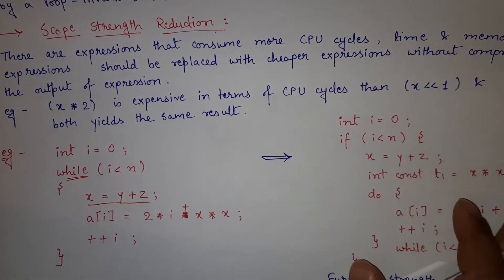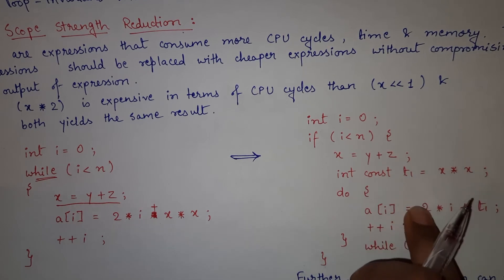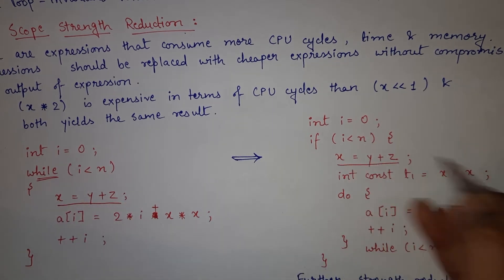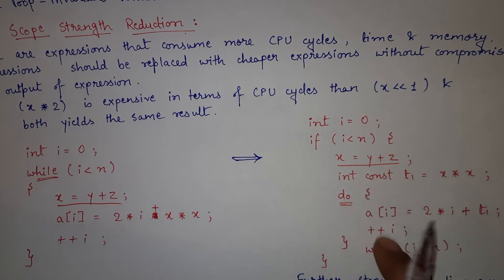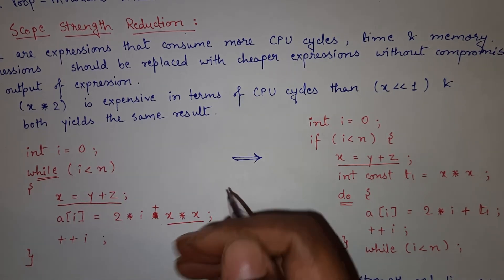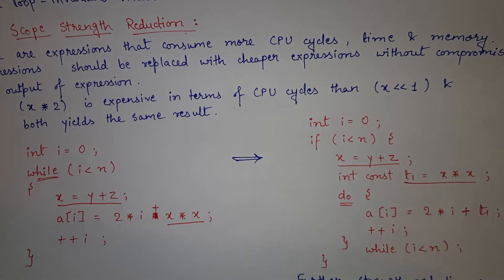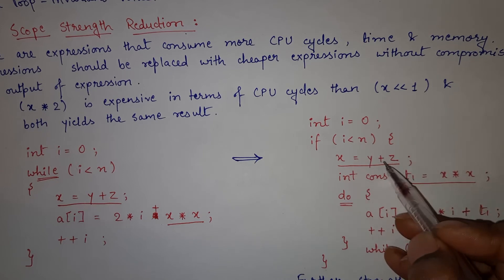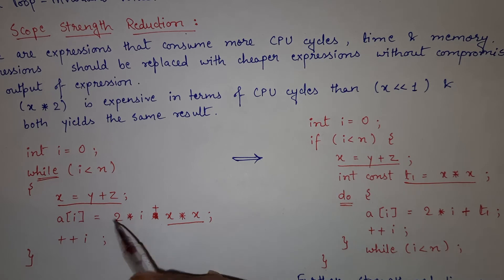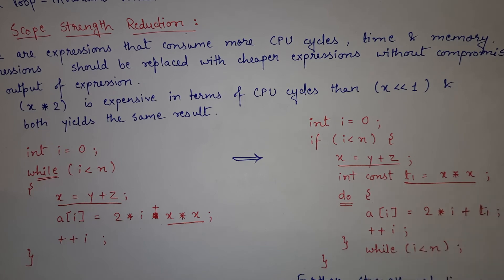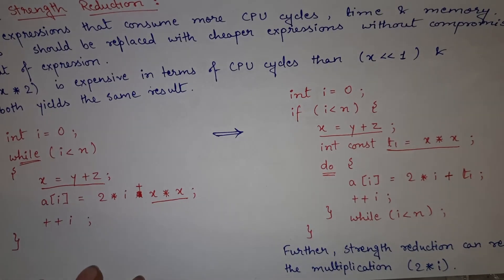Here is the revised code where we have already applied loop invariant computation. We have taken x = y + z outside the loop. Similarly, x * x is also constant since x is already outside, so t1 = x * x is also computed outside the loop. These two expressions — addition and multiplication — that were earlier evaluated inside the loop on every iteration are now computed only once. In this way, we have optimized our code.